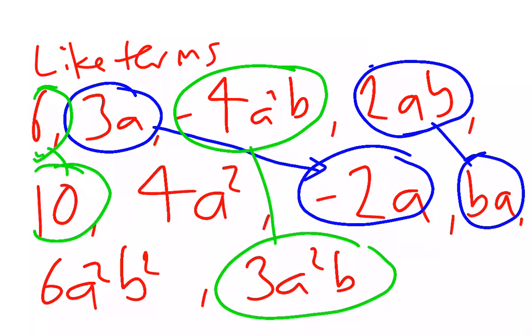We don't have a like term that matches up with 4a squared or with 6a squared b squared because there's nothing there that has quite the same part for its pronumerals.